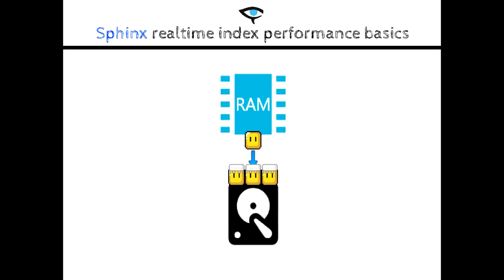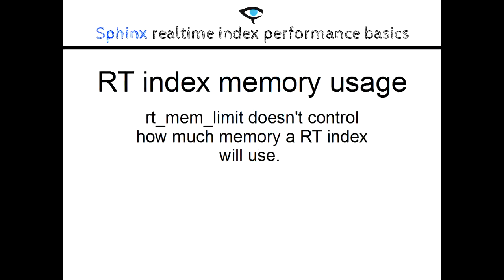A disk chunk is just like a plain index. The dictionary and attributes will be loaded in memory. After flushing, the RAM chunk is empty and can again be filled with data. An important thing to understand about the memory usage of a real-time index is that the memory used by disk chunks is not limited in any way by the RT-MEMLimit directive. The RT-MEMLimit option sets the size of the RAM chunk.